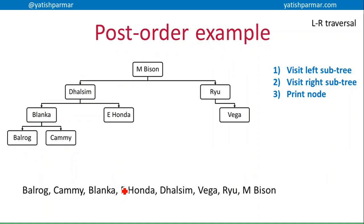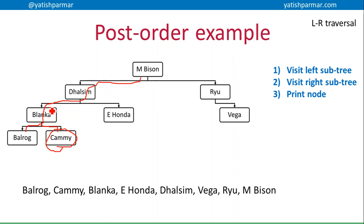The final depth-first traversal is post-order. The post-order recursive calls are slightly different: we visit the left subtree, the right subtree, and then print the node. So I go left, left, left, left until there are no more pointers to follow, and then I print the node. That recursive call is dealt with, I go back up, visit the right subtree, and then print out that node. I've done steps one and two for Blanca's recursive call, so now step three is to print her out. In post-order traversal, I'm basically printing out the children of a node before I print out the parent.